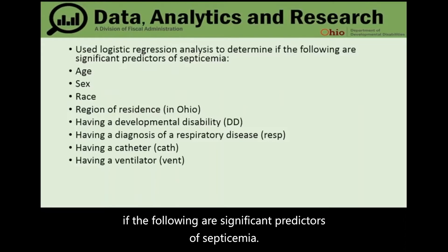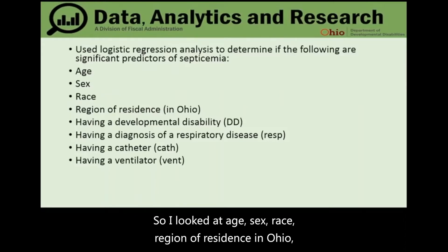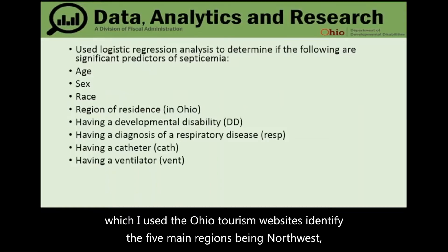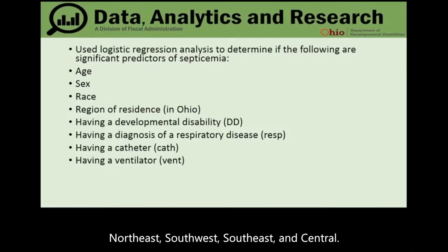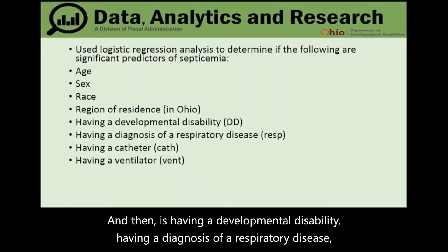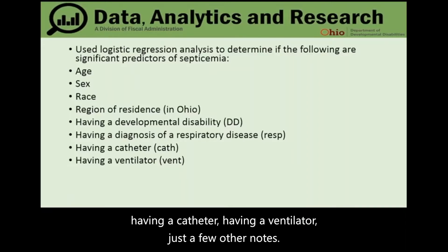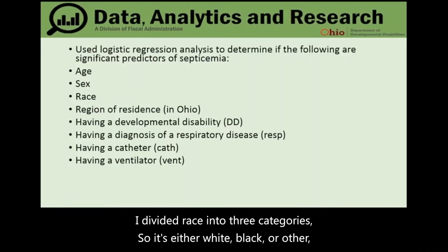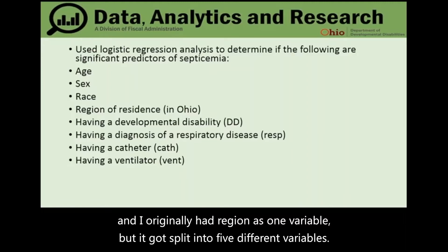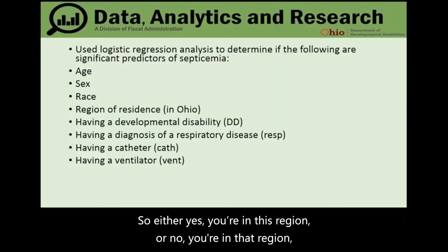The significant predictors examined included age, sex, race, region of residence in Ohio — using the five main regions from the Ohio tourism website: northwest, northeast, southwest, southeast, and central — having a developmental disability, having a diagnosis of a respiratory disease, having a catheter, or having a ventilator. Race was divided into three categories: white, black, or other.